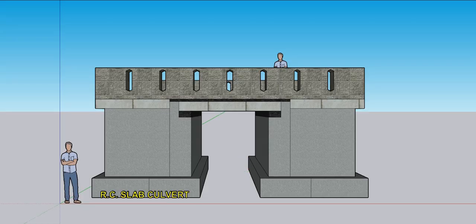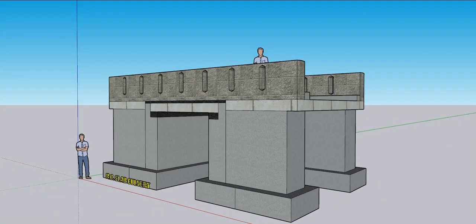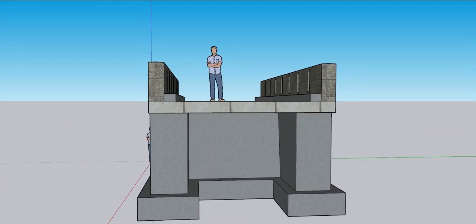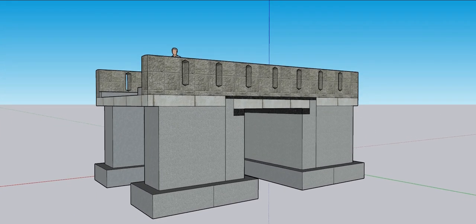Slab culverts are three-sided or deck slabs embedded in the soil on both sides, providing a bridge over the distance. They can replace box culverts if no artificial flooring is necessary.